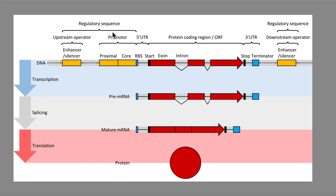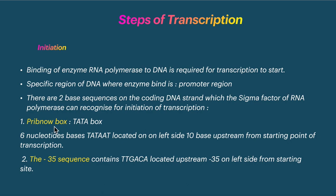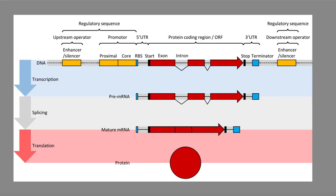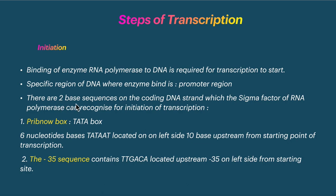Upstream of the transcription start site, there are two important sequences the sigma factor recognizes. The first is the Pribnow box (TATA box) — a 6-nucleotide repeat of the sequence TATAAT, located at minus 10 upstream from the transcription start point. The second sequence is TTGACA, located at minus 35 upstream. These sequences help the sigma factor bind.